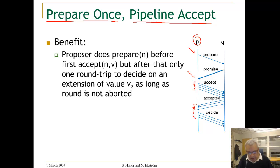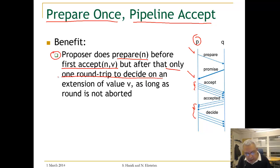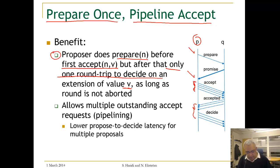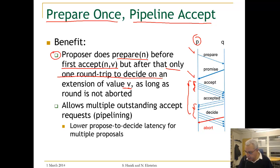The benefits are the following: the proposer does prepare before the first accept, and after that we have only one round trip to decide on any extension of our sequence, as long as a round is not aborted. This allows multiple outstanding accept requests, and we will basically have a lower propose-to-decide latency for multiple proposals.